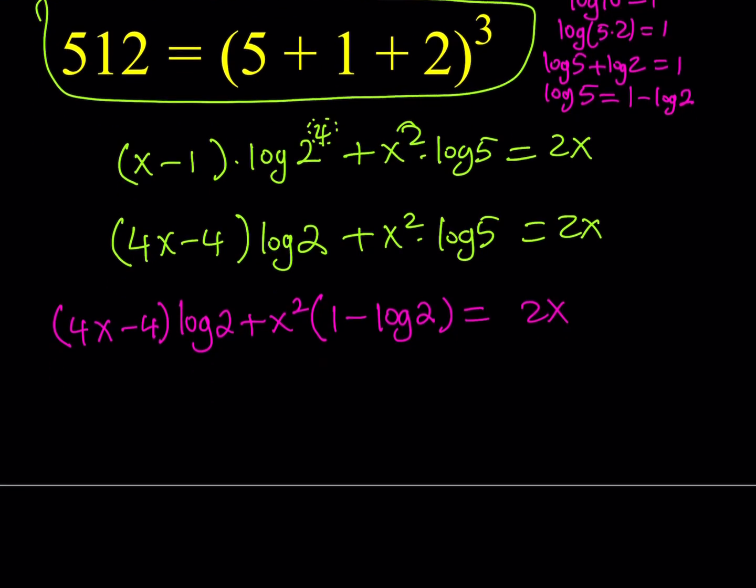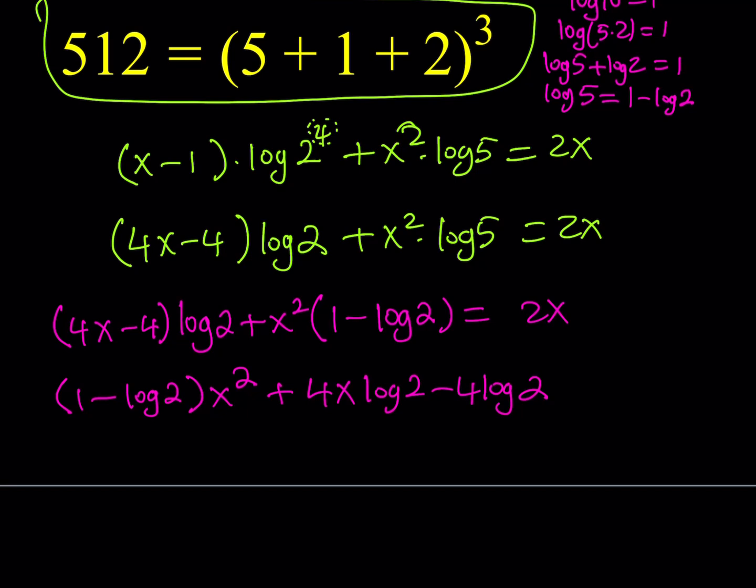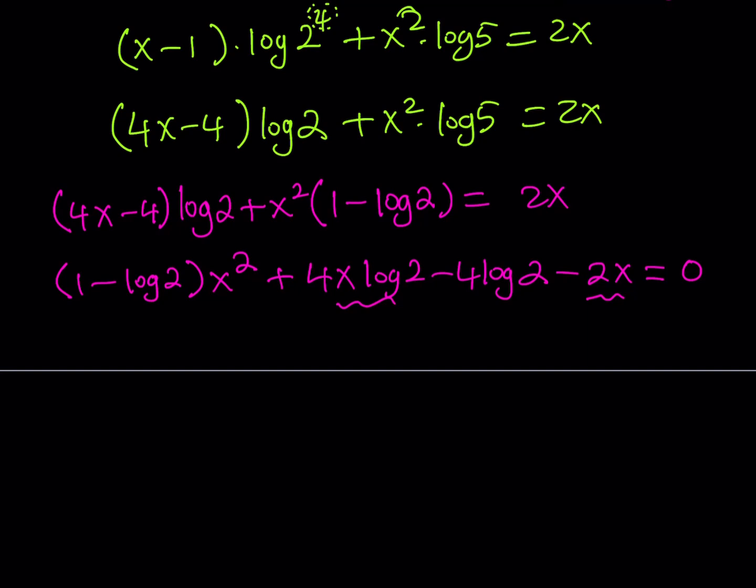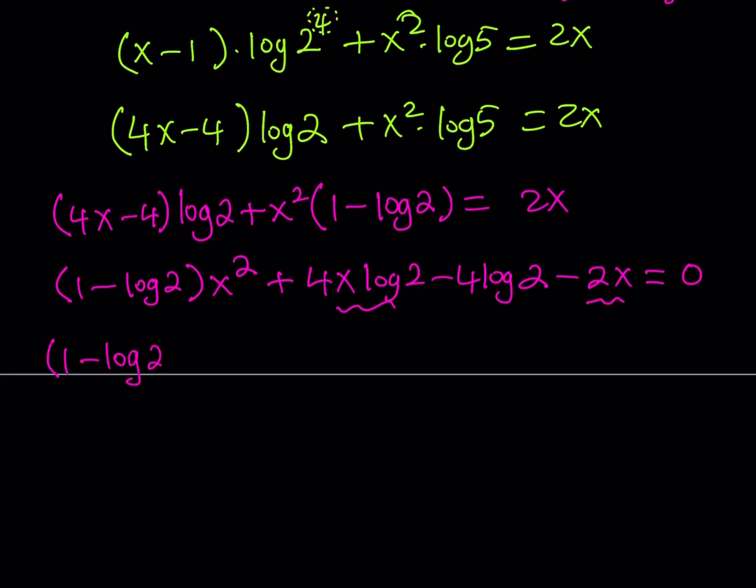So let's continue. (4x-4)log 2 + x²(1 - log 2) = 2x. Now we're going to put everything on the same side and distribute. One thing to keep in mind: when you're distributing, you don't want to distribute the x squared because we want to have a quadratic. So here's the goal: we want to make it a quadratic in x. So we want to get the coefficient of x squared, the coefficient of x, and the constant term. Anything that doesn't have an x in it is considered a constant term. So it makes sense if we don't distribute the coefficient of x squared.